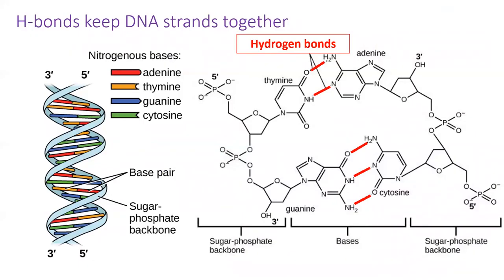Hydrogen bonds are holding your DNA strands together right now. They also allow DNA to encode information. Thymine and adenine are held together by exactly two hydrogen bonds, while guanine and cytosine are held together by three.